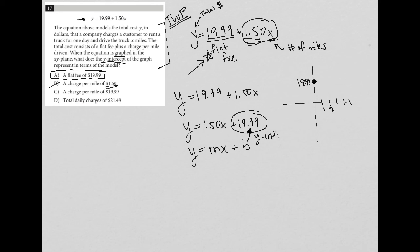$1.50 is not the y-intercept. Choice C is wrong because although $19.99 is the y-intercept, that is not a charge per mile. And choice D is wrong because $21.49 is not the y-intercept. We're looking for what the y-intercept represents. So choice A is the best answer here.